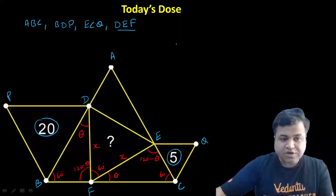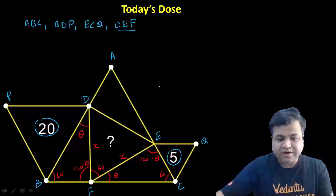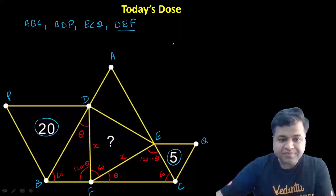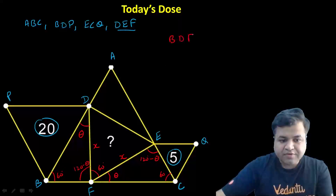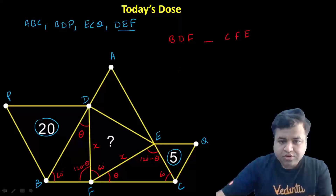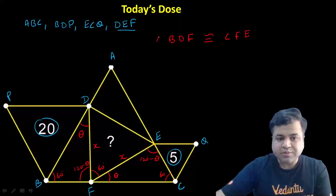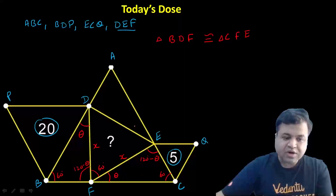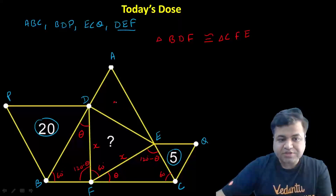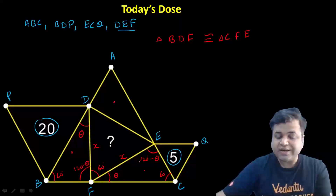Now, considering triangle BDF and triangle CFE: as you can see, they will both be congruent, because all angles are equal and one side DF equals FE. So these two triangles are congruent. By symmetry, we can also say that triangle ADE will be congruent to these other triangles as well. So all three corner triangles are congruent and will have the same area.